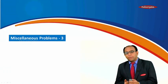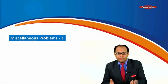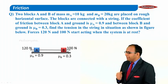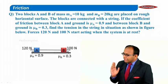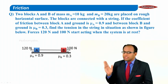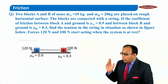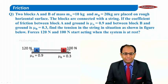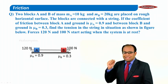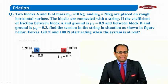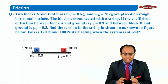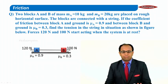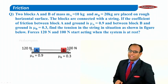Welcome back students. We are talking about friction problems, let's continue with a few more examples. In this given example, we have two blocks A and B. There is a force of 120 Newtons acting on the left of A and a force of 100 Newtons acting on the right of B. We have to find the tension in the string.